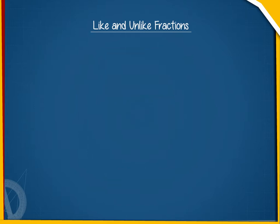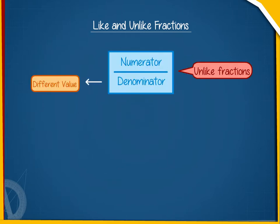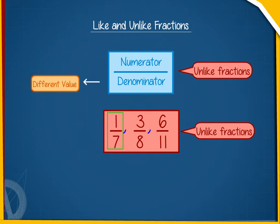Similarly, the fractions with different denominators are called unlike fractions. For example, 1 by 7, 3 by 8, 6 by 11, etc. are unlike fractions.